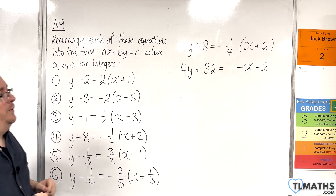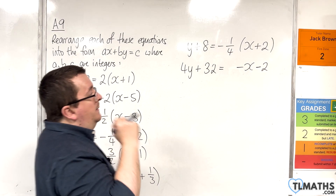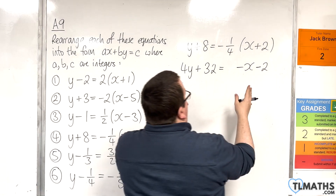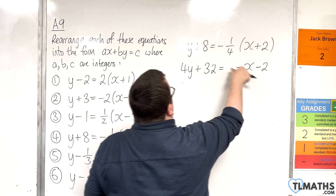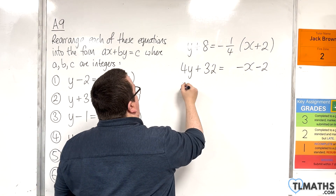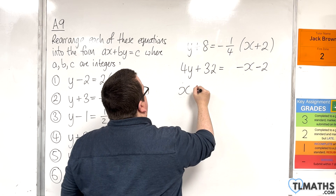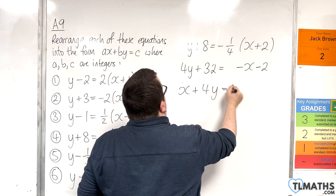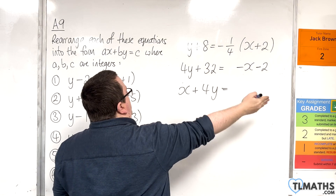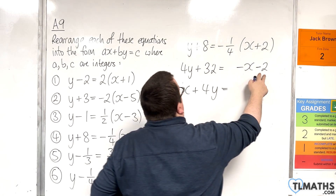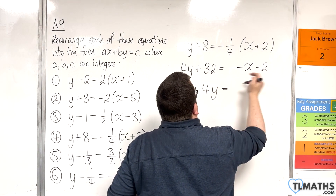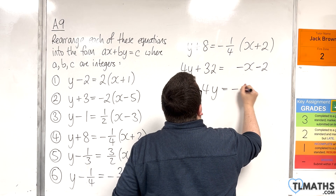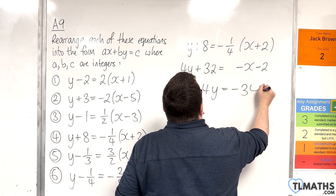At that stage, add x to both sides, keep the 4y where it is, then subtract 32 from both sides. Minus 2 take away 32 is minus 34. So the result is x plus 4y equals minus 34.